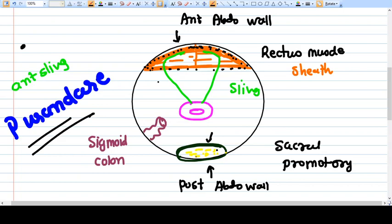This thing you will see here is a vertebra, that is sacral promontory. This thing you are seeing here is a sigmoid colon, and sigmoid colon is on the left side.